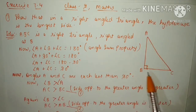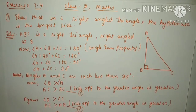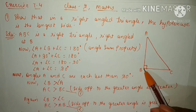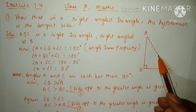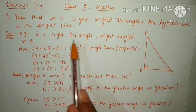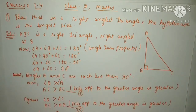Suppose this ABC is a right angled triangle which is right angled at B. The side opposite to the right angle is always the hypotenuse, so AC is our hypotenuse. Now, we all know that the sum of all the angles of a triangle is 180 degrees.